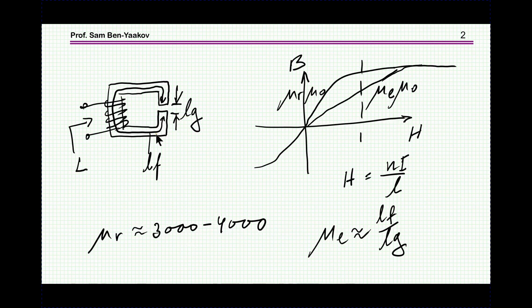Why do we need a gap in a core that is used as an inductor? Here are the windings, this is the length of the path, length of the ferrite material, and here is the length of the gap. We usually need the gap in order to store energy.